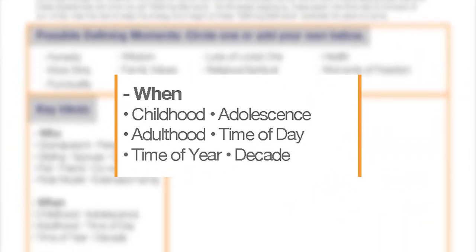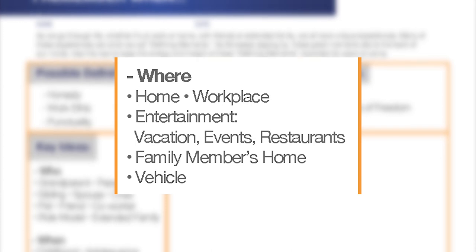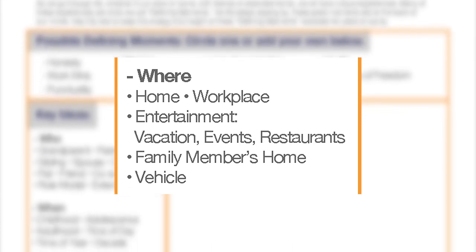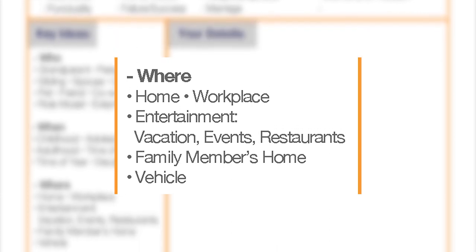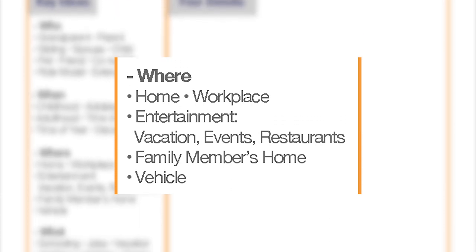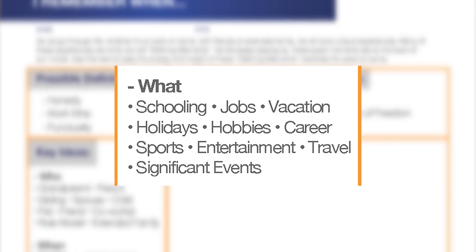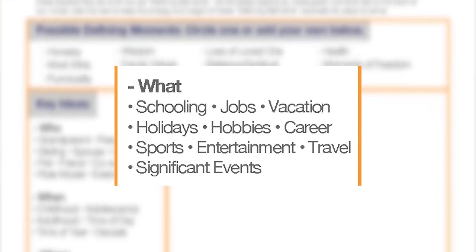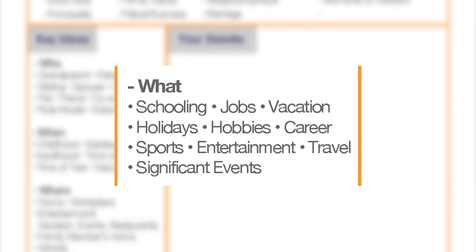Note the decade if you don't know the exact date. Then 'Where' — was it at home, the workplace, entertainment like a movie theater or amusement park, vacation, restaurants, a family member's home, or in a vehicle? And then 'What' — was it schooling, jobs, vacation, holidays, hobbies, career, sports, entertainment, travel, or significant events? So this is the who, when, where, and what.